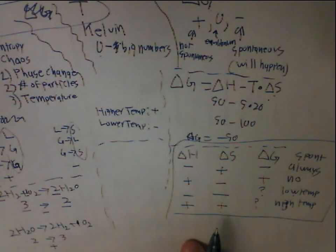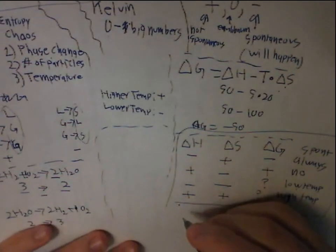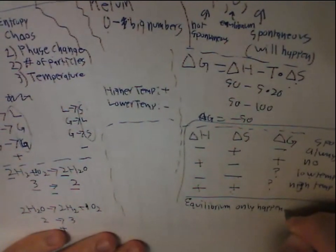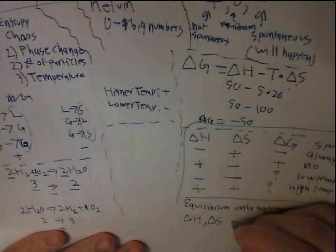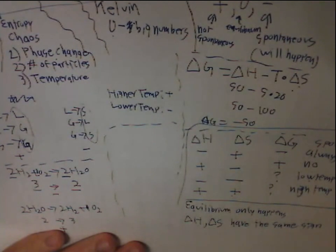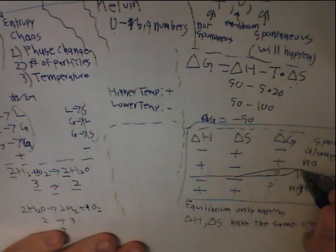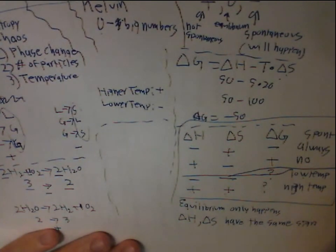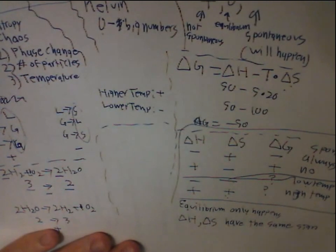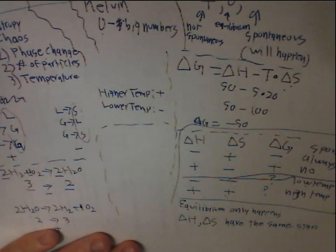Because this is technically an equilibrium web series, equilibrium only happens when delta H and delta S have the same sign. This has been an introduction to basic equilibriums and spontaneity, and it gives you an introduction to the math of equilibrium.